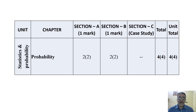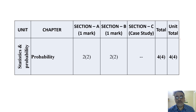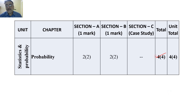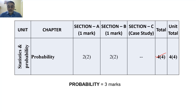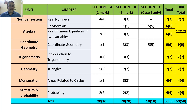The last chapter is Probability — only four questions: two from Section A and two from Section B, totaling four marks. The unit weightage is three marks according to the Term 1 syllabus.